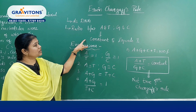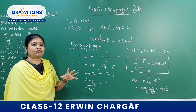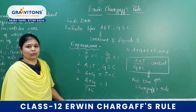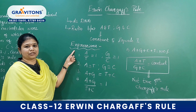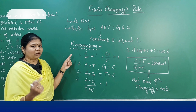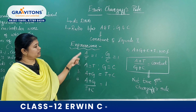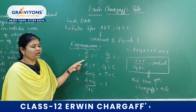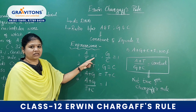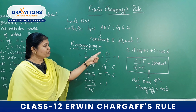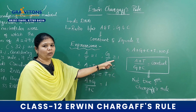The same statement can be represented in various forms of expressions. Let us recall all these expressions of Chargaff's rules. Expression number 1: the ratio between Adenine and Thymine will be constant and equal to 1, and Guanine and Cytosine will be constant and equal to 1.